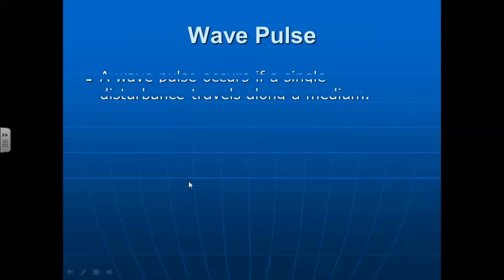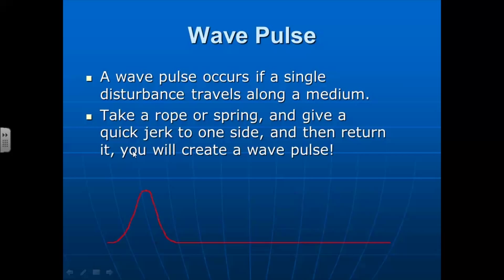A wave pulse is a single disturbance that travels along the medium. So imagine you take a rope or a spring or a string of some kind, and you give it just one quick little snap, you get one little wave that travels down that medium and propagates through that rope. And that is called a wave pulse. It's a single pulse of a wave.